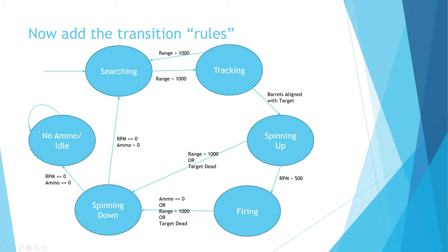You'll notice a little looped arrow on the no ammo idle state — that means you sit here forever. There are no ammo refills at the moment. The gun is basically useless and can never leave the state. There's no way of it going anywhere else.